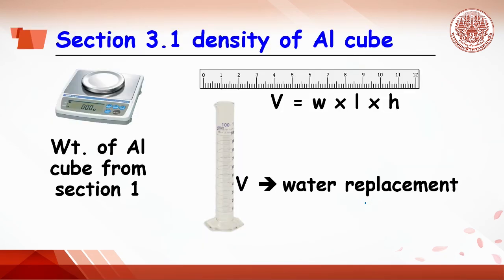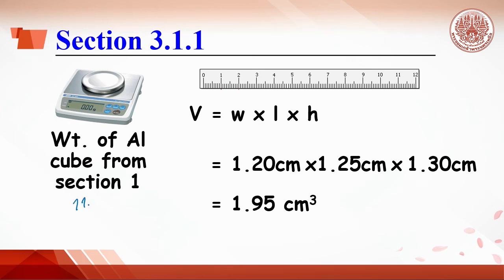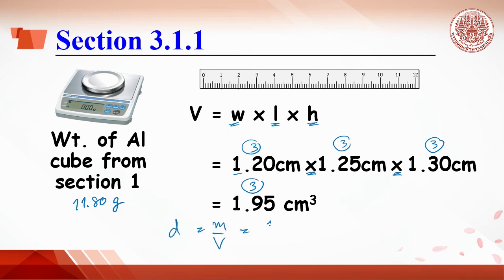Section 3: The density of the aluminum cube is calculated using the mass from Section 1. For example, the mass is 11.80 grams. The volume from measurement gives three significant figures each dimension, and once multiplied, the volume has three significant figures. So density equals mass divided by volume: 11.80 grams (four significant figures) divided by 1.95 cm³ (three significant figures), so the result should have three significant figures.